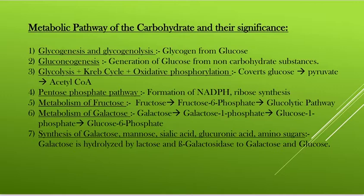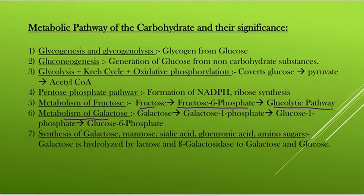Next is the metabolism of fructose, where fructose converts into fructose-6-phosphate by the enzyme hexokinase, and that product further enters the glycolytic pathway. Then there is the metabolism of galactose, where galactose converts to galactose-1-phosphate, then to glucose-1-phosphate, and finally to glucose-6-phosphate, giving ATP as energy. Last is the synthesis of galactose, mannose, sialic acid, glucuronic acid, and amino sugars, where galactose is hydrolyzed by lactase and beta-galactosidase into galactose and glucose.